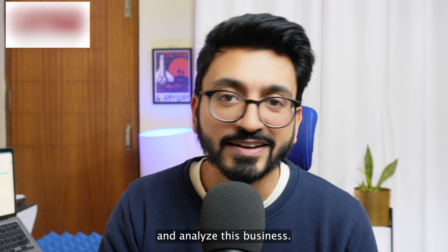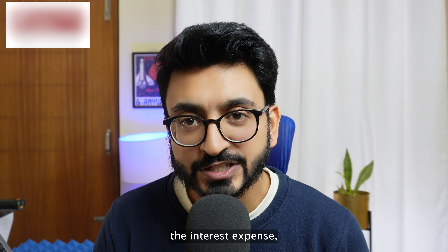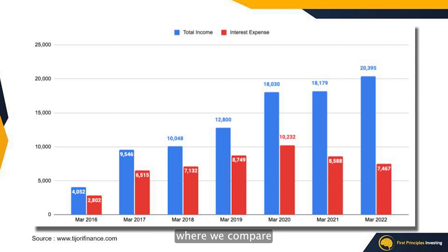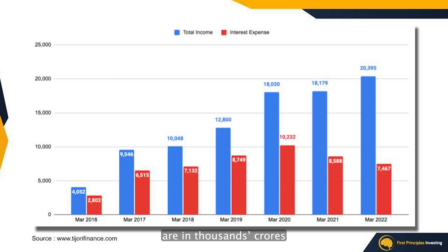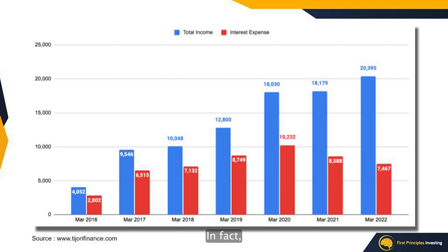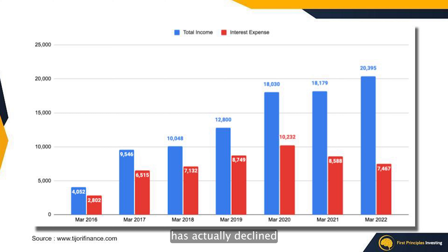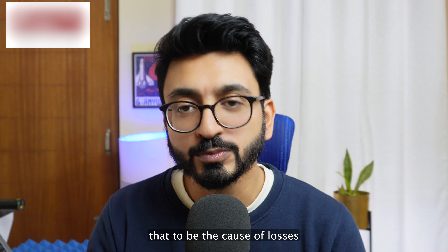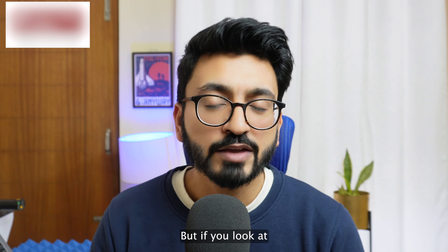Let's analyze the interest expense first. On your screen you should be able to see a graph comparing total income in blue versus interest expense in red — numbers are in crores. What we can see is there is nothing out of the ordinary; interest expense is increasing in much the same proportion as total income. In fact, in 2021 and 2022 the interest expense has actually declined versus total income. So interest expense does not appear to be the cause of losses in FY19 or FY20.